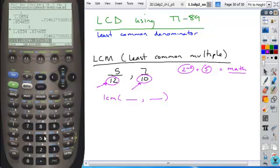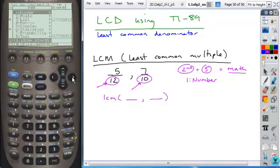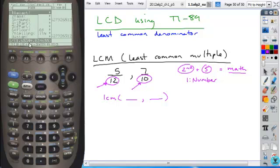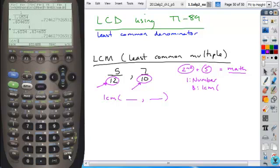If you're finding the LCD between these two fractions, what you're going to do is locate LCM. It's located in the following: if you hit the second button, and then you go to this math catalog that's above the number five. Second, math. It opens up this catalog of math functions under the very first one, number.